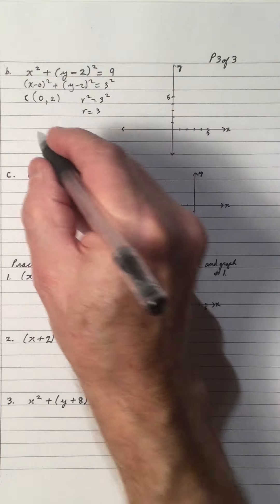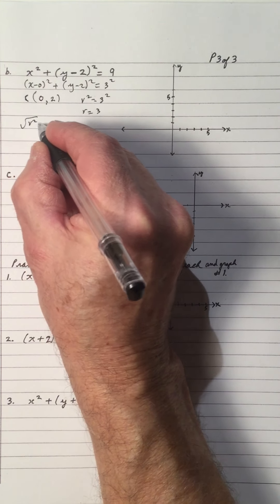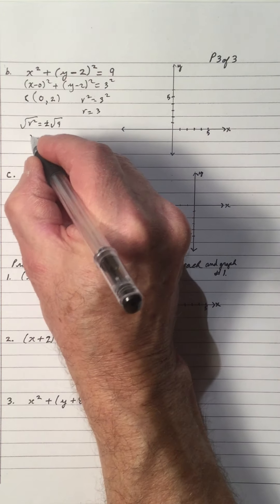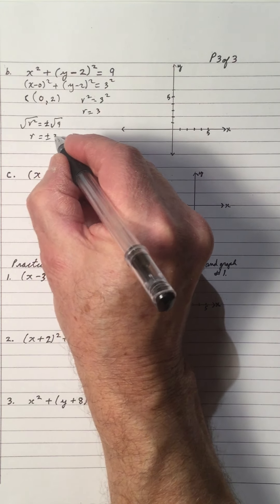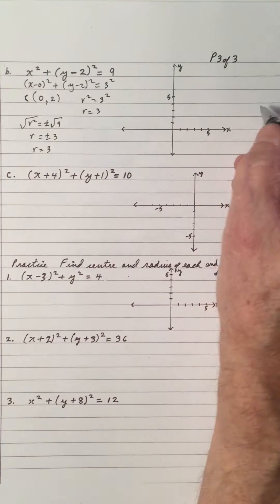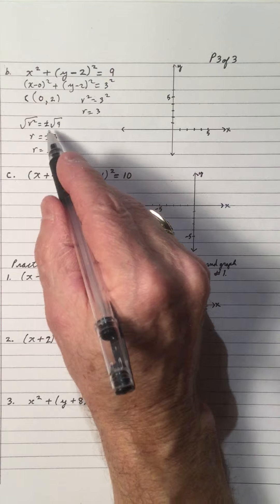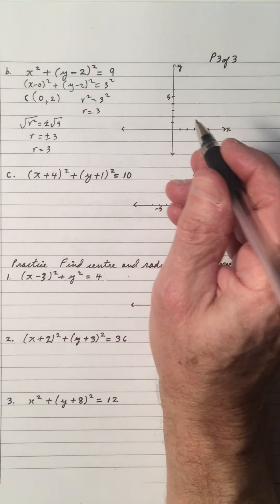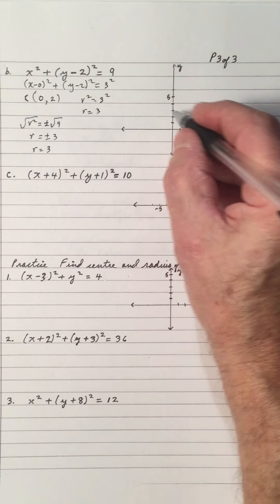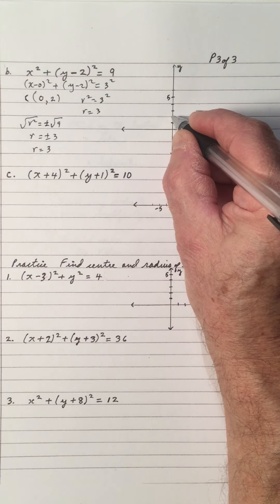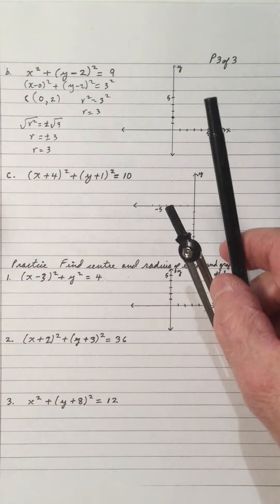We can solve it: the square root of r squared is plus or minus the square root of 9, so r equals plus or minus 3. But remember, the radius can't be negative — it's always positive. So the center is (0, 2) and the radius is 3. I'll use the protractor again with a radius of 3, putting the tip at the center (0, 2).